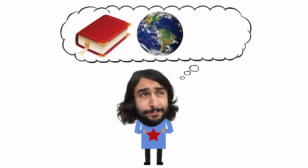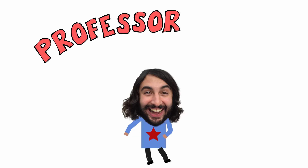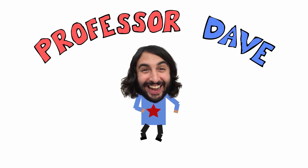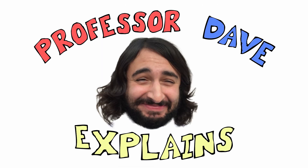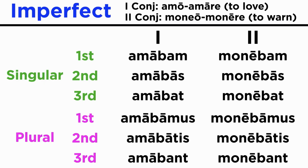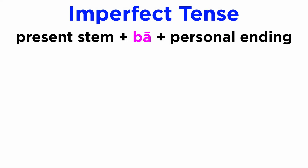Professor Dave Explains. After learning the imperfect indicative of the first and second conjugations, conjugating the imperfect for the third and the fourth will be very easy. In fact, the rule for the imperfect will be identical, and that is present stem plus ba plus personal endings.